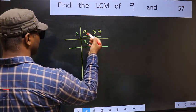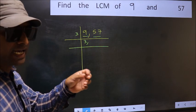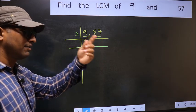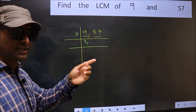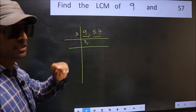To check whether 57 is divisible by 3 or not, add the digits. 5 plus 7, we get 12 and 12 is divisible by 3. So this number is also divisible by 3.